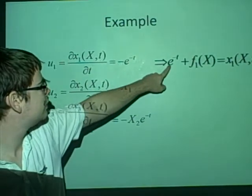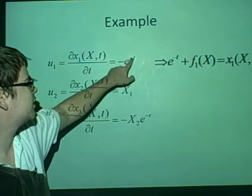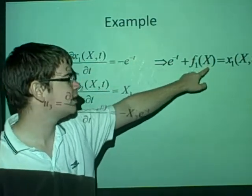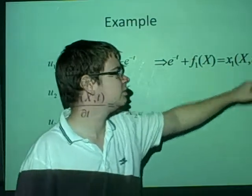well, this one gives us, integrate, so that becomes, the minus comes down, so it's e to the minus t. We have some function, so we've got f1 of X, we call it big X, and this is equal to little x1.